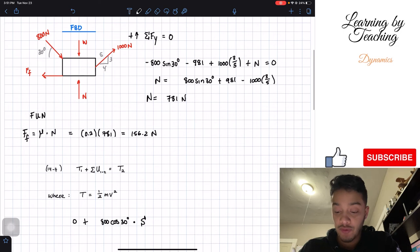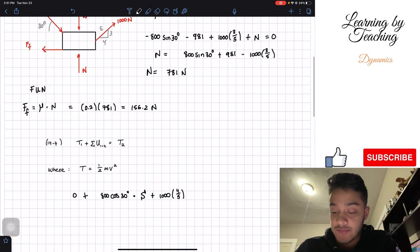Then the next force we have, going to the right, is this 1,000, but the x component of it, the horizontal component, which is 4 over 5, times the distance S. Then we also have minus my frictional force, which is equal to 156.2, times the distance S.